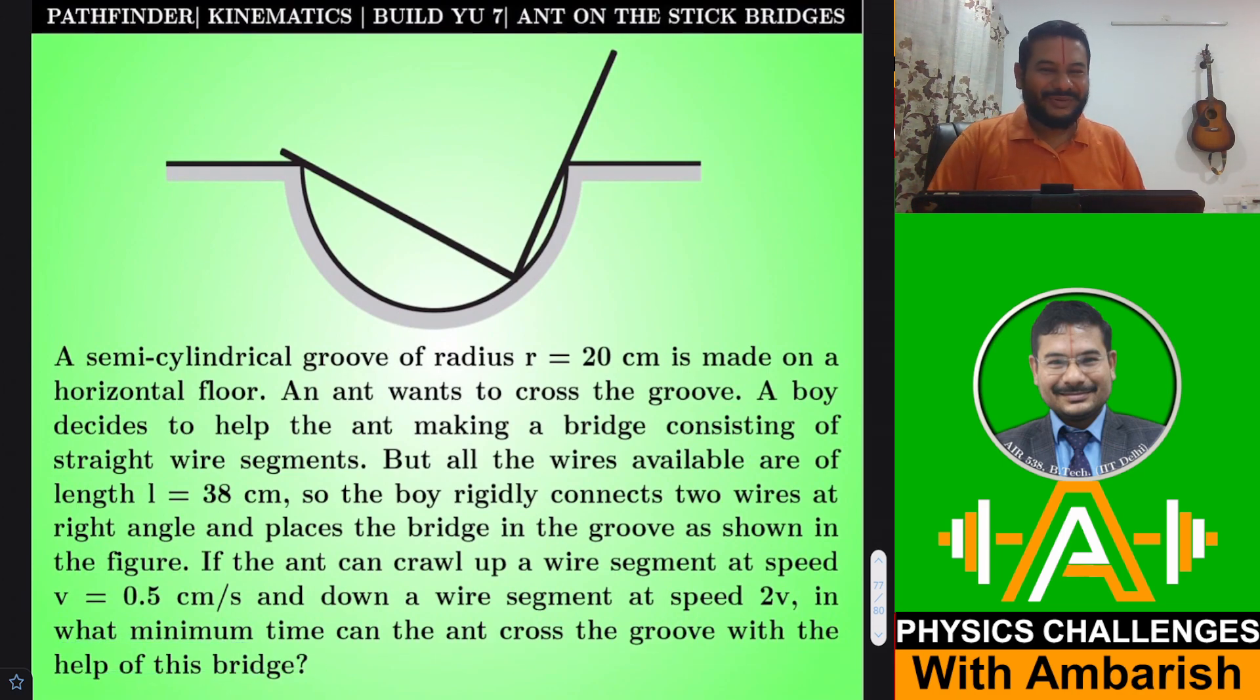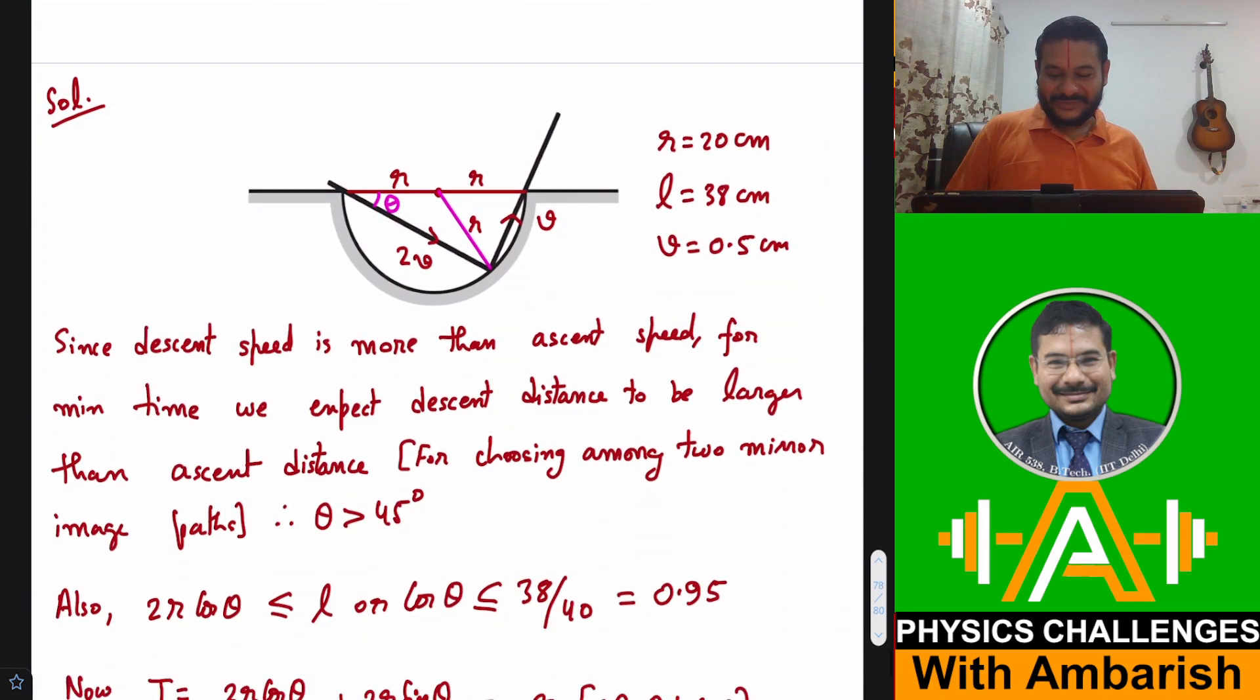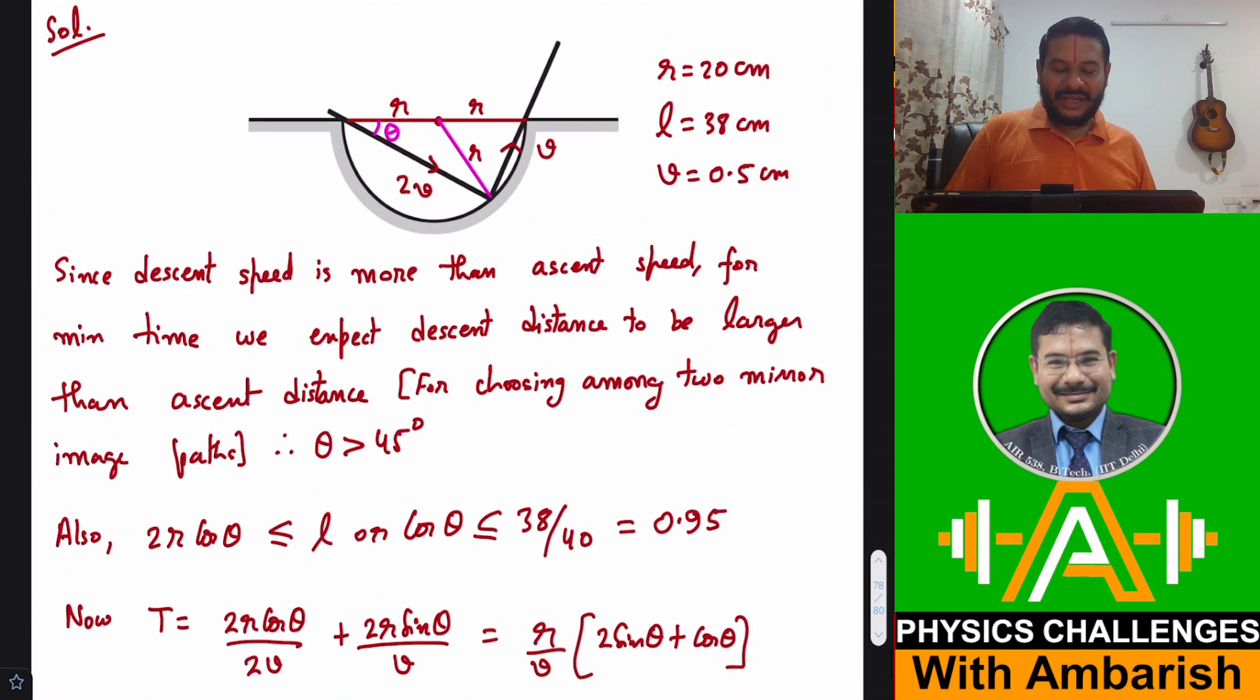If you want, you can give it a try. I'll get into my analysis right away. So what I've done, I've chosen a parameter theta. Let's say this angle is theta and this radius is r. So this radius is also r, this radius is also r. So this is an isosceles triangle.